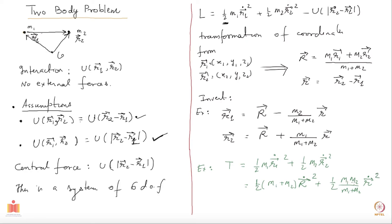Let me check the dimensions: I have two powers of mass here and one power below, so it gives one power of mass, which is consistent. Now let me define capital M as m1 plus m2, the total mass, and I also introduce mu defined as m1 m2 over (m1 plus m2). You can see that this piece m1 m2 over (m1 plus m2) is just mu, and mu is called the reduced mass.